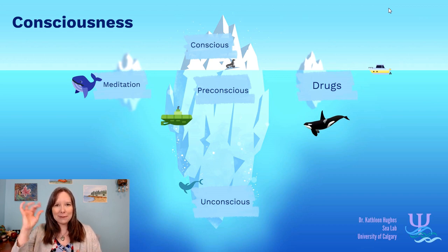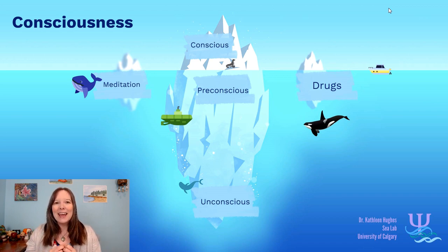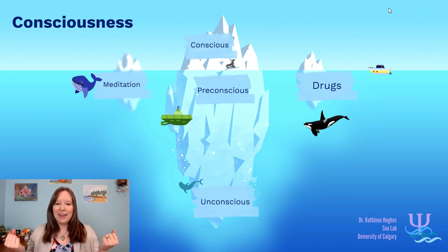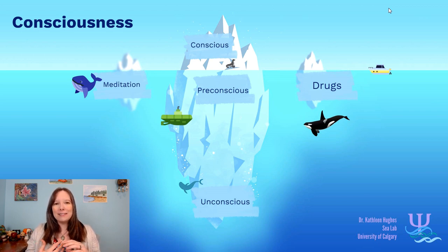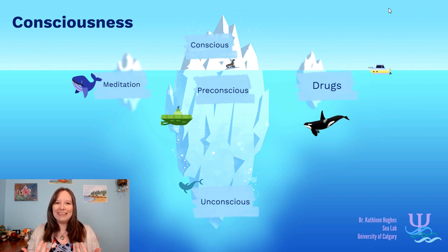The tip of the iceberg — the part we can see, but also the smallest part — is considered to be a metaphor for our consciousness, what we're currently thinking of. The part just below the surface of the water that we could see from a boat is considered the pre-conscious: the part of consciousness we're not currently thinking of but could access with a little bit of effort.